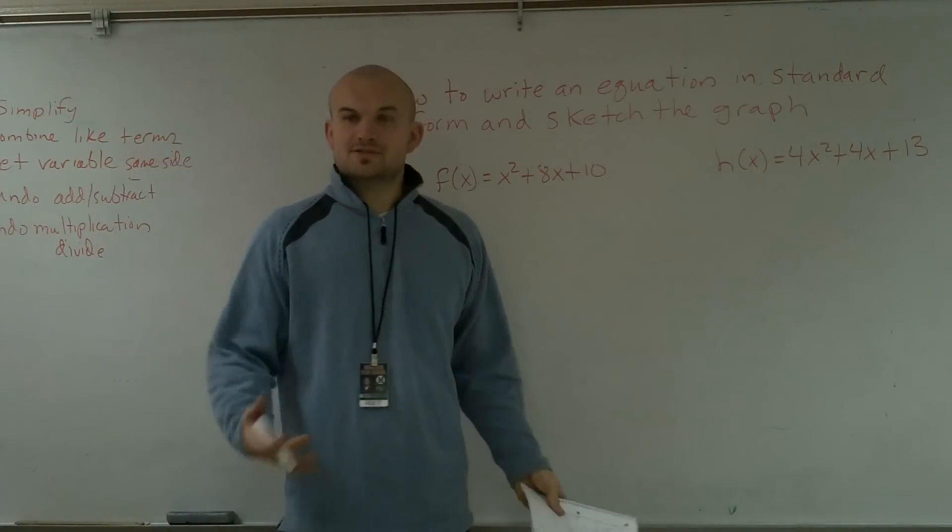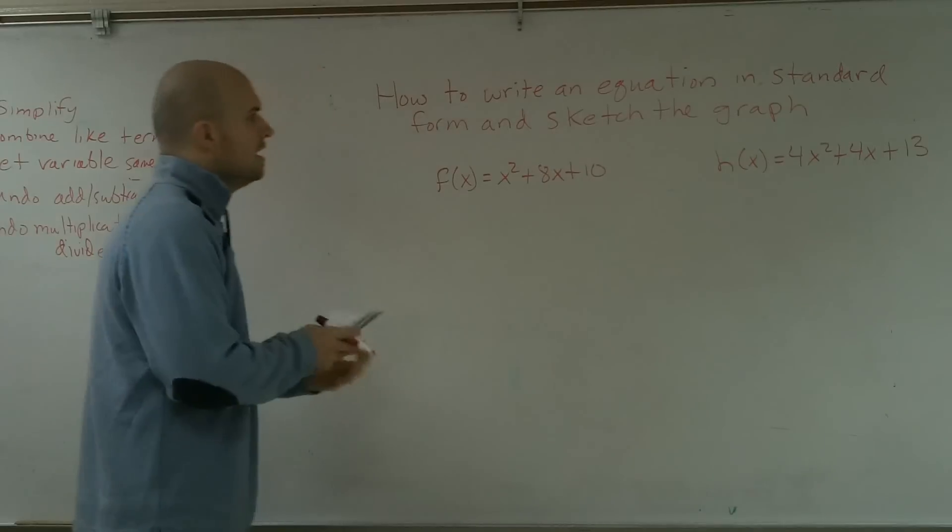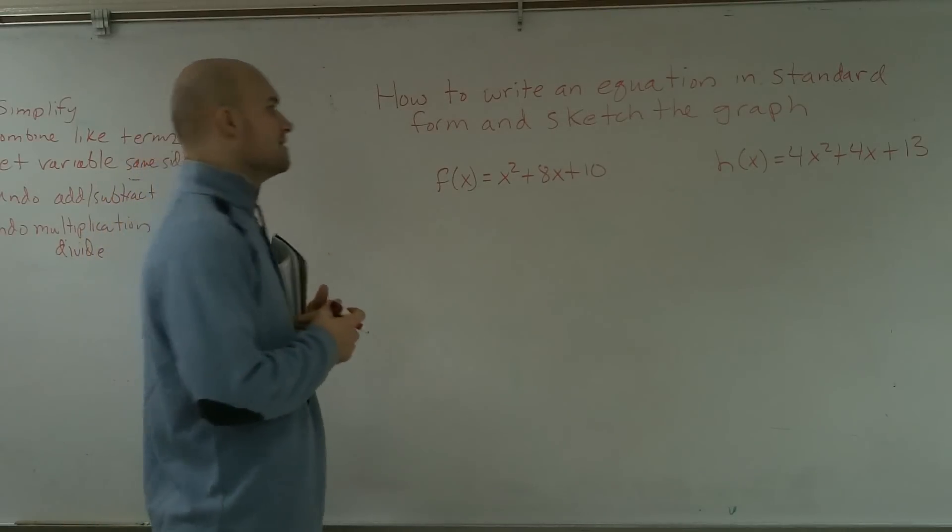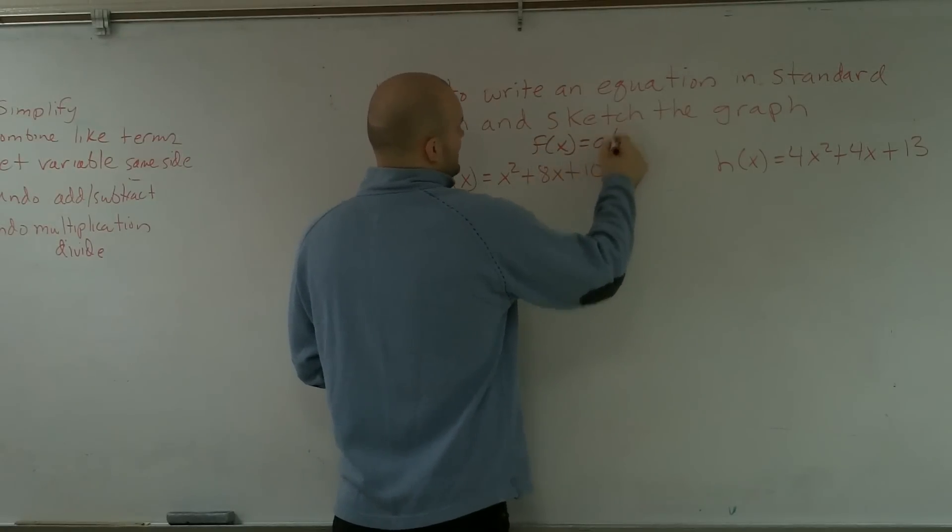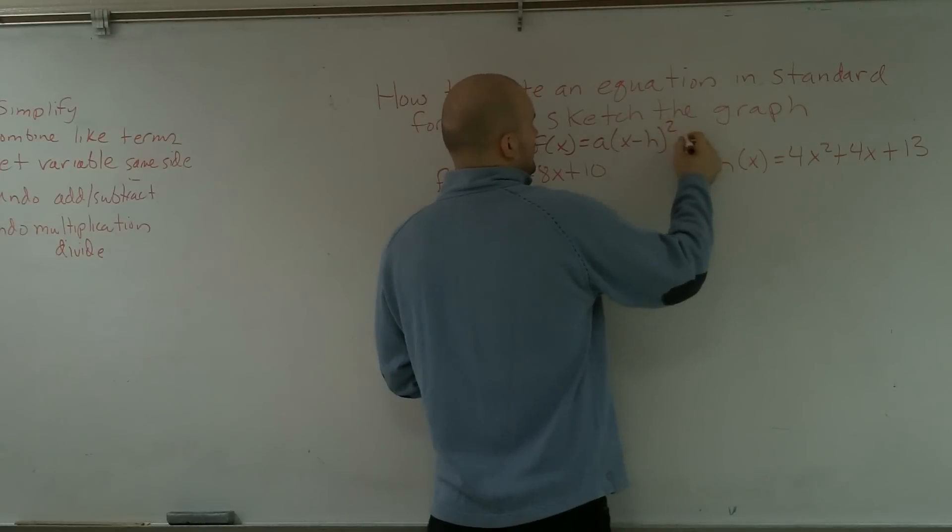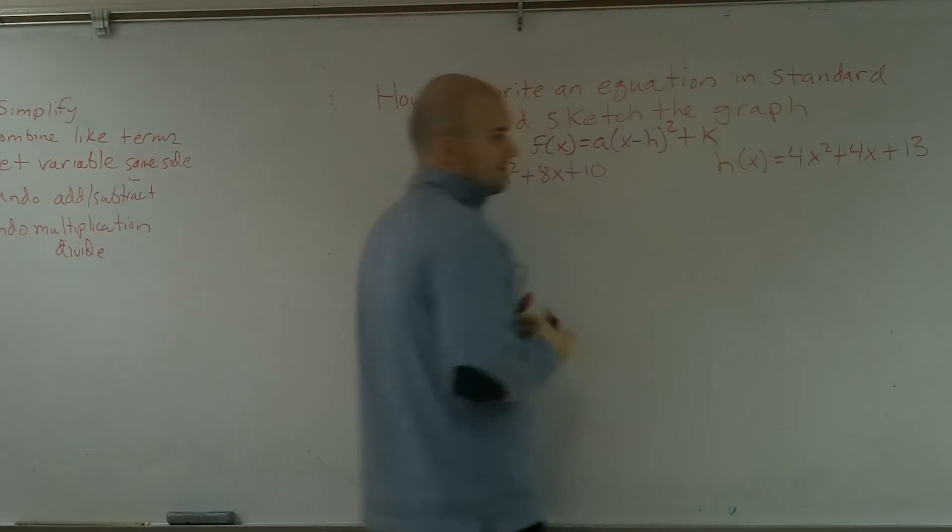Now, this is a little bit of review with you guys, so I'm going to go a little bit quicker going through this. A couple things you've got to remember about our standard form is that we have f of x equals a times x minus h squared plus k.